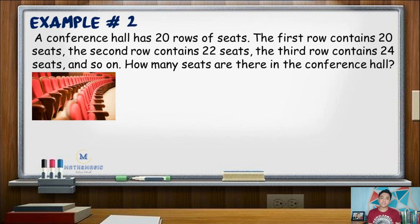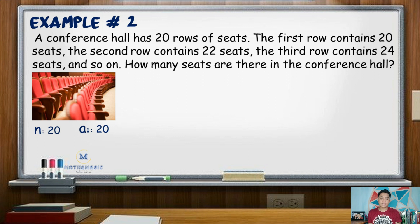Another example: a conference hall has 20 rows of seats. The first row contains 20 seats, the second row contains 22 seats, the third row contains 24 seats, and so on. How many seats are there in the conference hall? Here, n represents the number of rows, so n equals 20. The first term is the number of seats on the first row, so a sub 1 is 20. For the common difference, we subtract 22 minus 20, giving us positive 2.